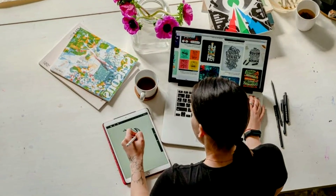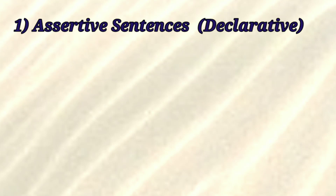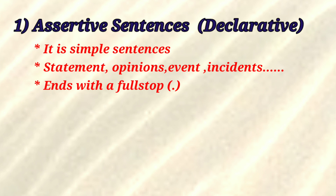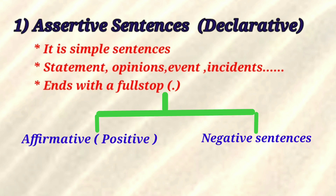First is assertive sentence, also called declarative sentence or simple sentence. It includes statements, opinions, events, and incidents — and these sentences end with a full stop. Simply put, almost all sentences that end with a full stop are assertive sentences — no question mark, no exclamation mark. Both positive and negative sentences are included in assertive sentences.